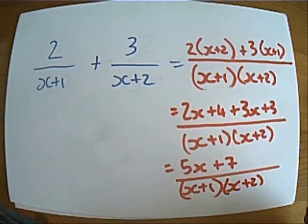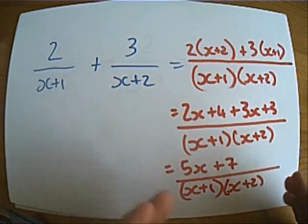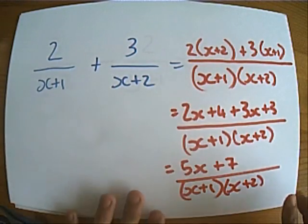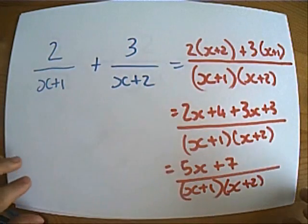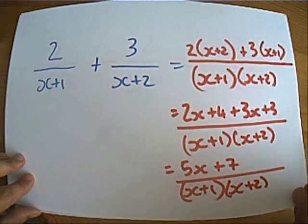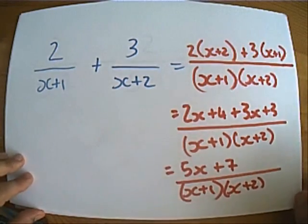And then to tidy up a little bit further, 5x plus 7, all over x plus 1 times x plus 2. And there is our answer, a single fraction in its simplest terms. We can't cancel this down any further. We're just going to leave it as it is. So that's how you add two relatively straightforward algebraic fractions.